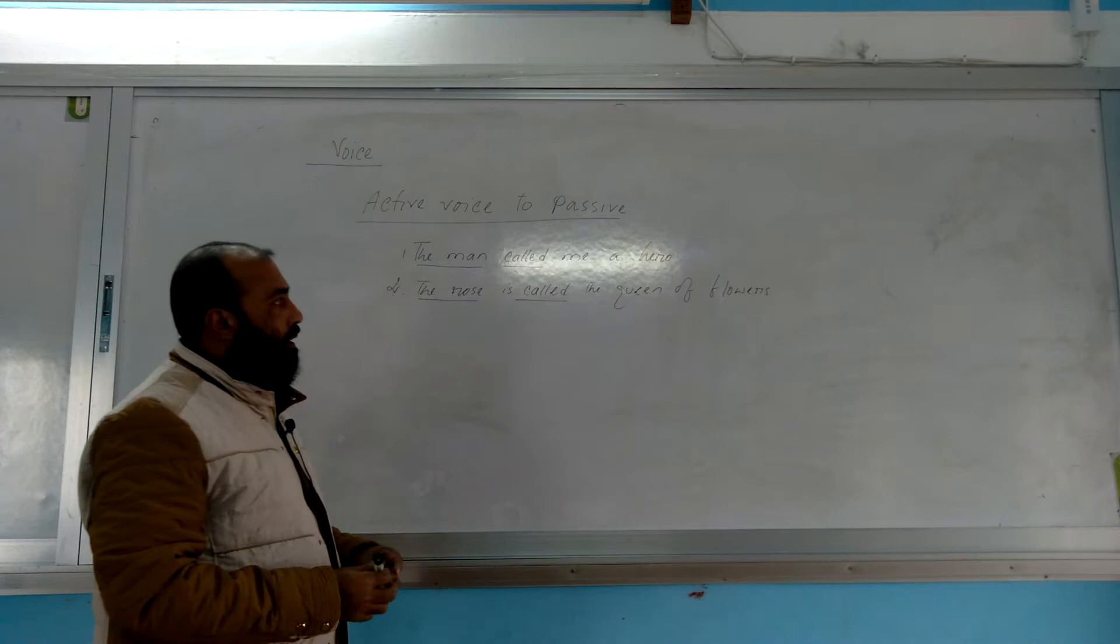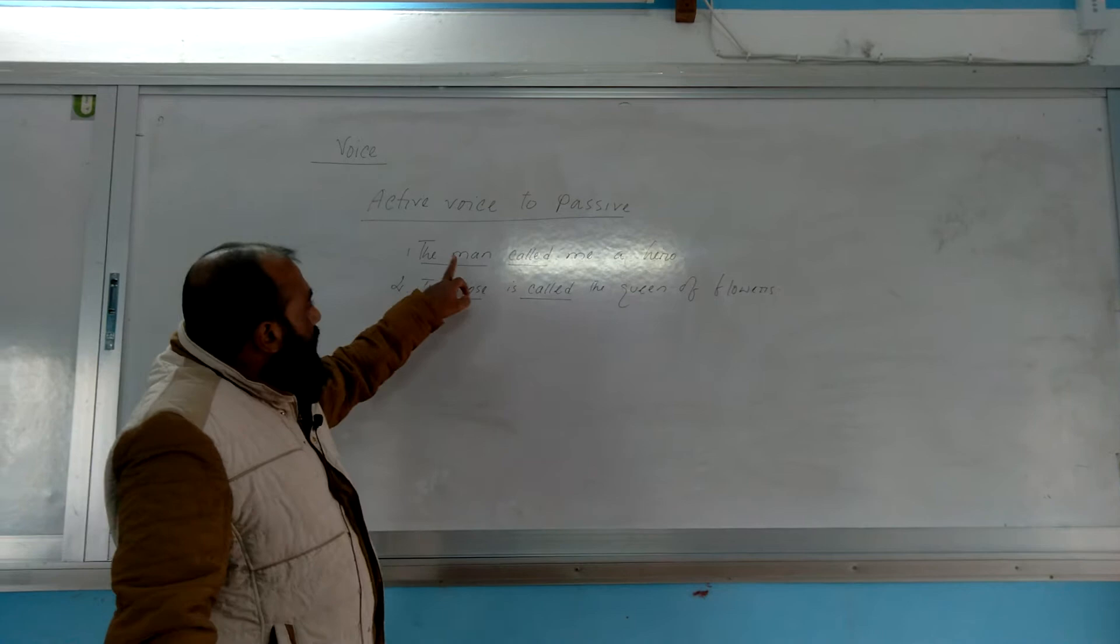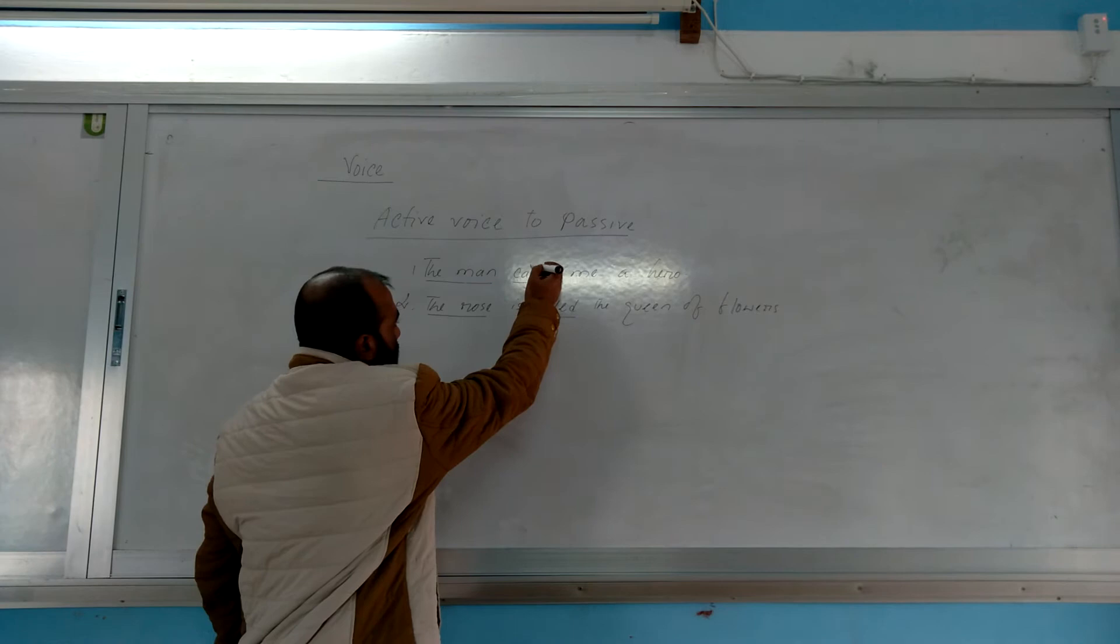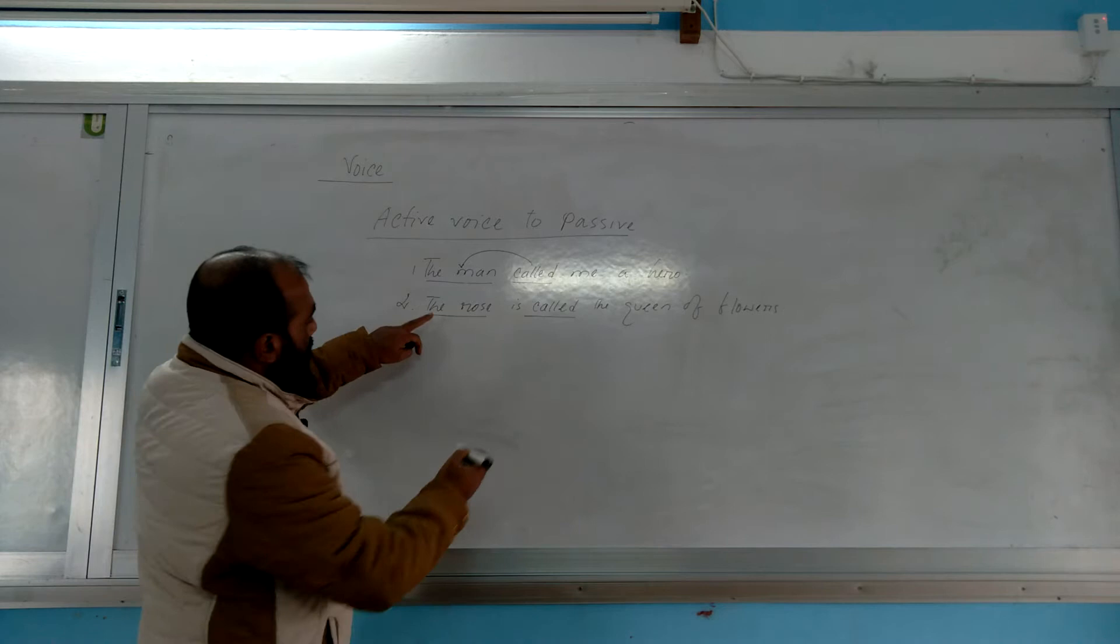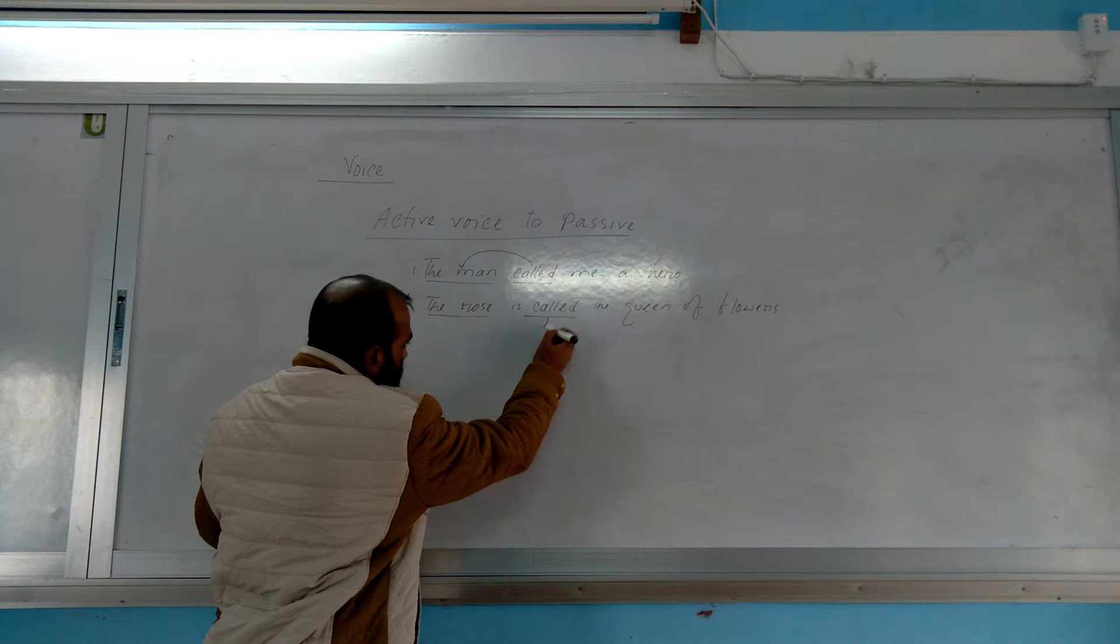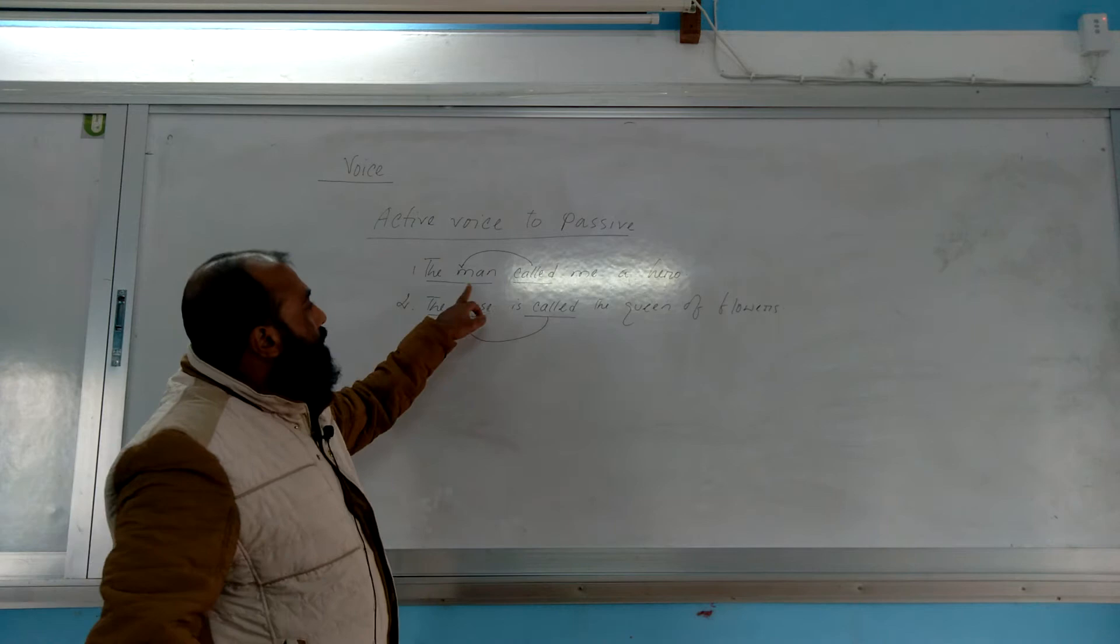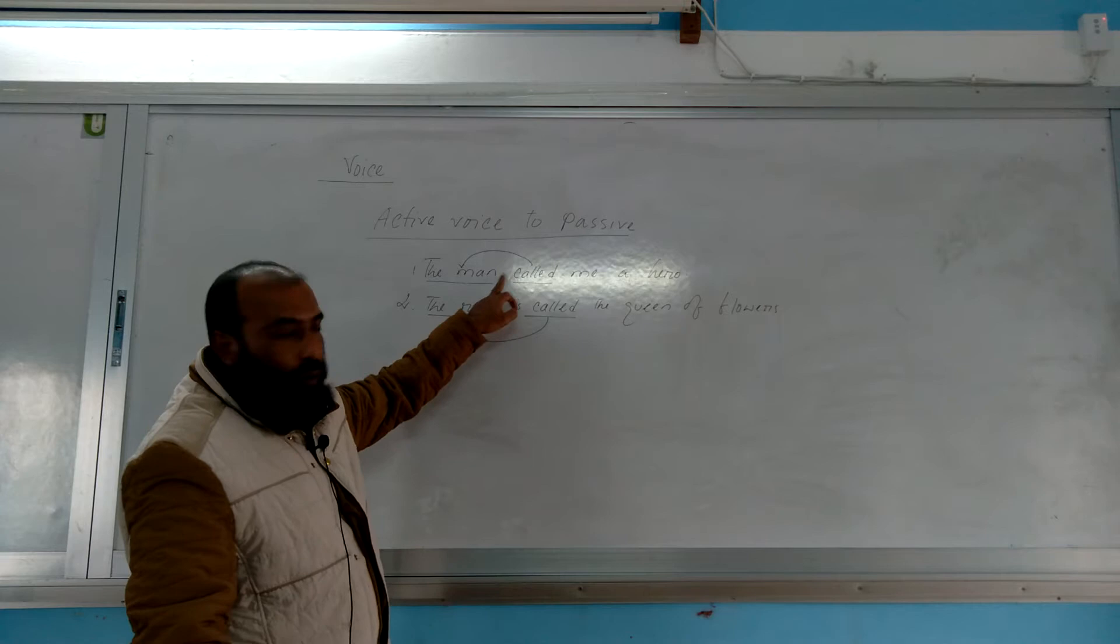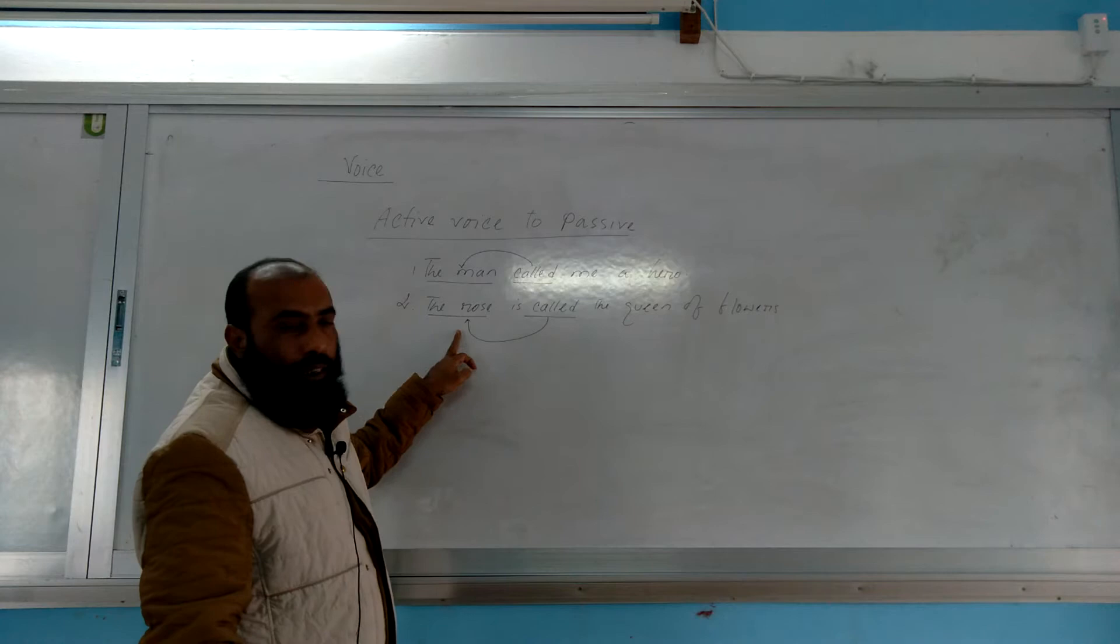Look at the first example: The man called me a hero. Here subject is the man and verb is called. The rose is called the queen of flowers - here subject is the rose. In the first example, subject is active to do the function of the verb, but here subject is inactive, is passive to do the function of the verb.